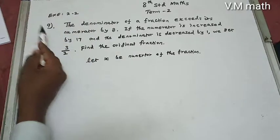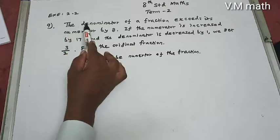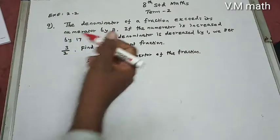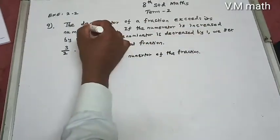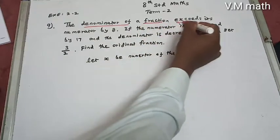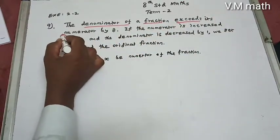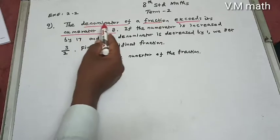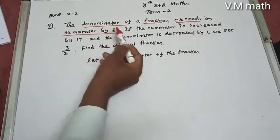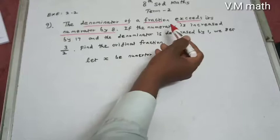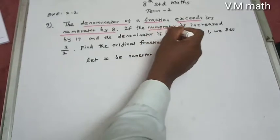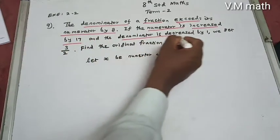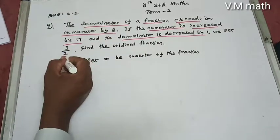Question number 9: The denominator of a fraction exceeds its numerator by 8. The second condition — if the numerator is increased by 17 and the denominator is decreased by 1, we get 3 by 2.